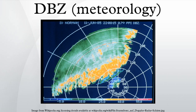dBZ stands for decibel relative to Z. It is a logarithmic dimensionless technical unit used in radar, mostly in weather radar, to compare the equivalent reflectivity of a radar signal reflected off a remote object to the return of a droplet of rain with a diameter of 1 mm.